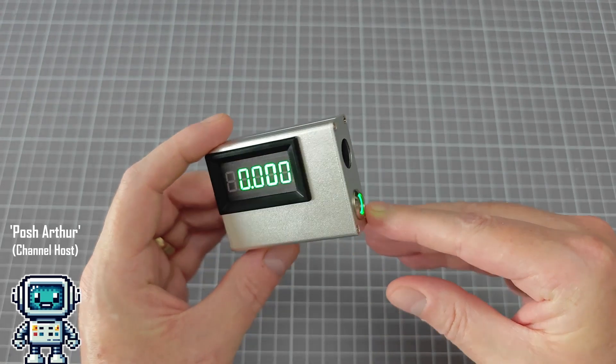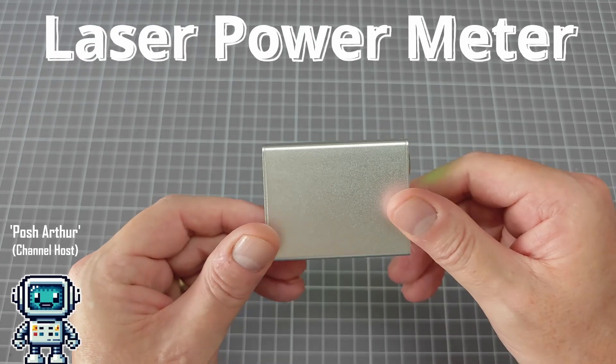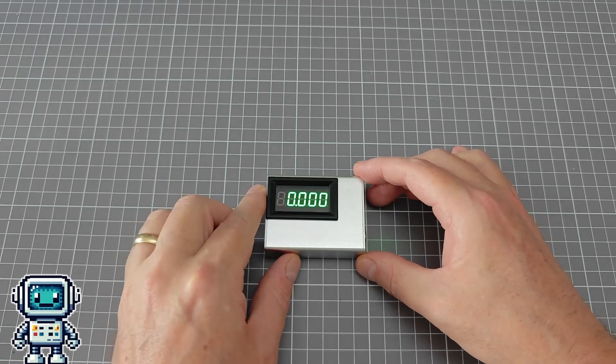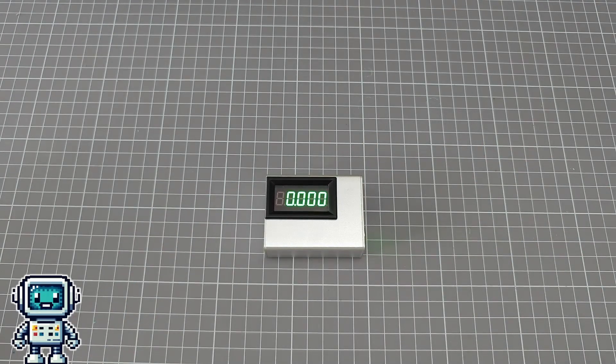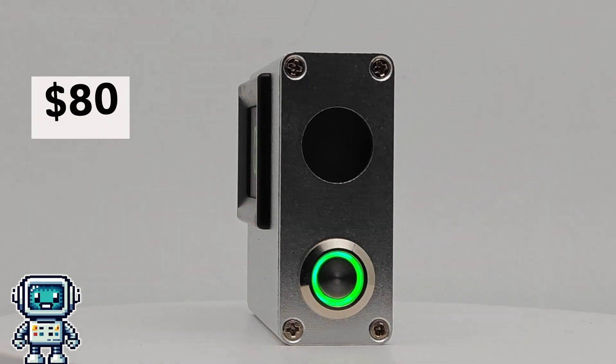I never thought we would ever buy a laser power meter. They are just too bloody expensive and only have a single function. But here we are. We bought this thing on Taobao for about 80 dollars. Given that hobby grade devices typically cost hundreds of dollars and lab grade ones can cost thousands, this makes it pretty much the lowest cost laser power meter available.